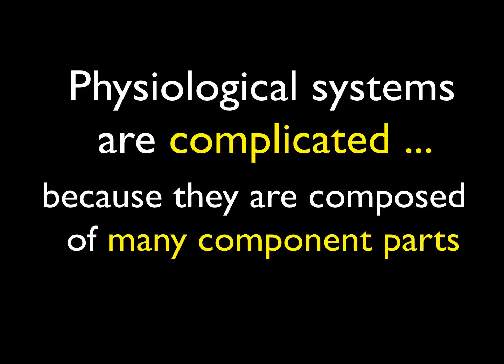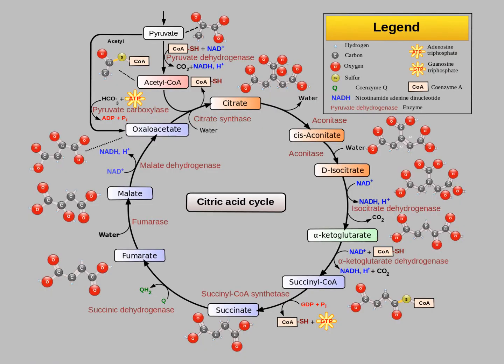We know that physiological systems are complicated. They're composed of many different component parts and we learn about each individually and maybe sets of component parts. When we're trying to understand how cells work, for example, we might look at an individual metabolic pathway like the citric acid or Krebs cycle and we break it down into its important steps. When we know what each step does, we consider that we understand the whole.